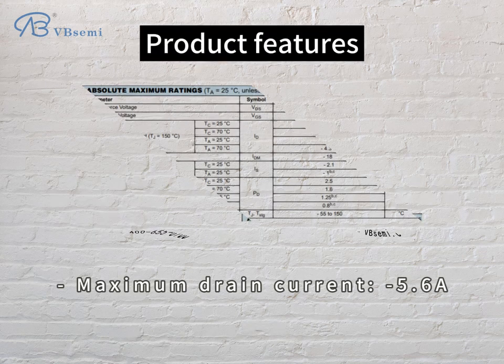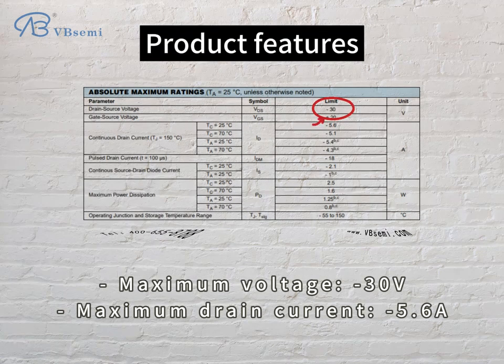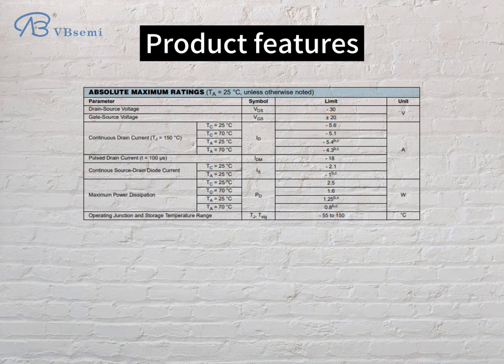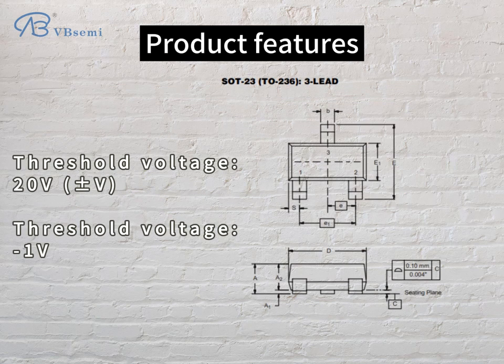Product features: Maximum voltage -30V, maximum drain current 5.6A, threshold voltage -1V.